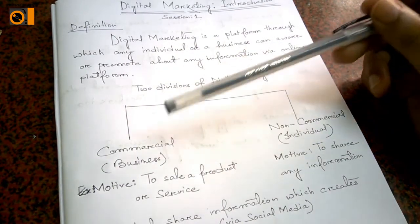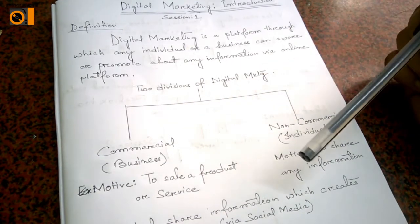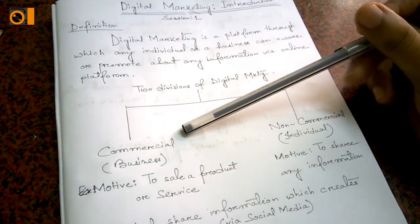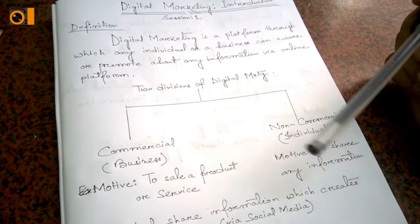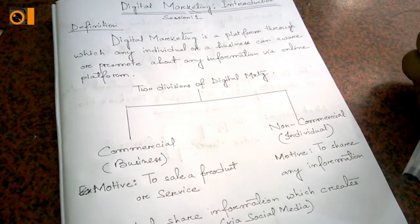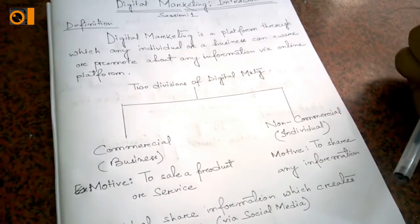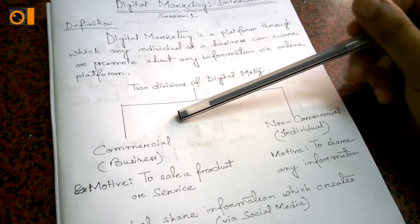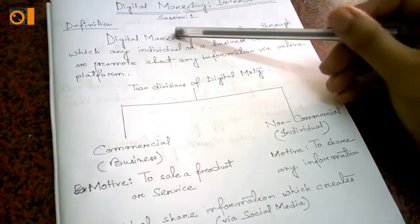So that is what digital marketing as a concept is all about. There are two divisions of digital marketing - one being commercial and one being non-commercial. Commercial one is the business one, and non-commercial one is the individual one. Now why do I call it commercial and non-commercial? Because in business, the main motive is to sell a product or service so you are earning a revenue out of it. And in the non-commercial part, as you can see, it is only to share any information. It creates the initial word of mouth, and return on investment or the revenue earning possibility is less.